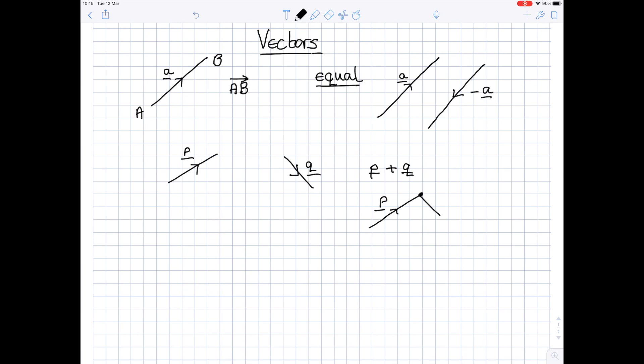So my vector Q just comes down like that. And the vector P plus Q is the beginning of P to the end of Q.